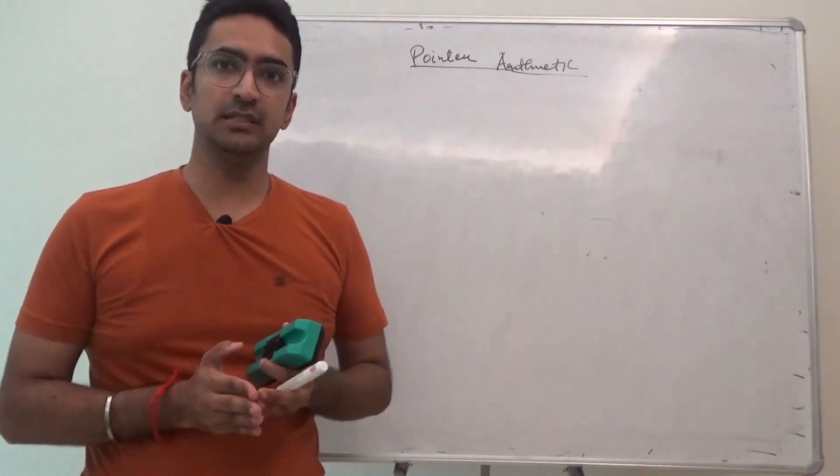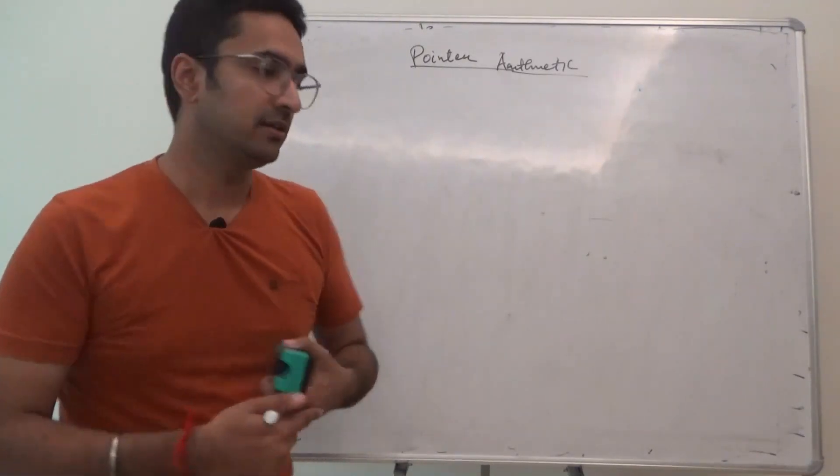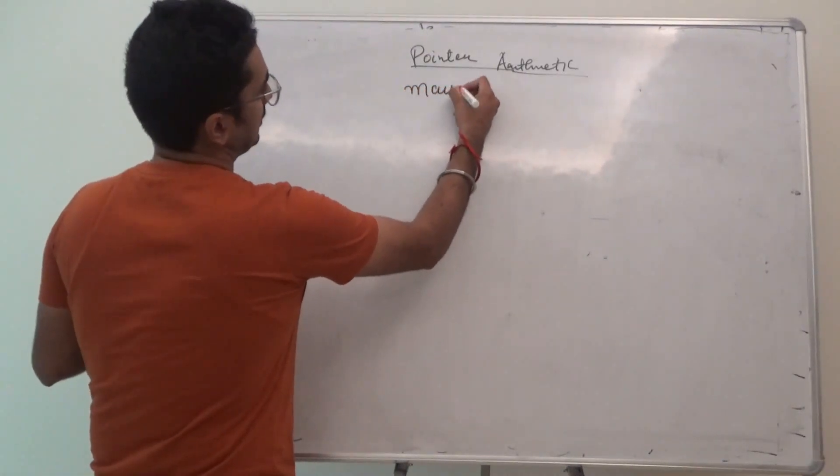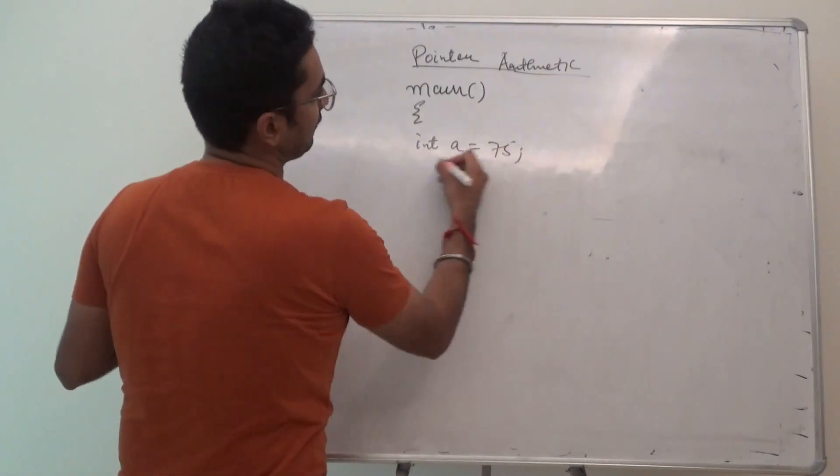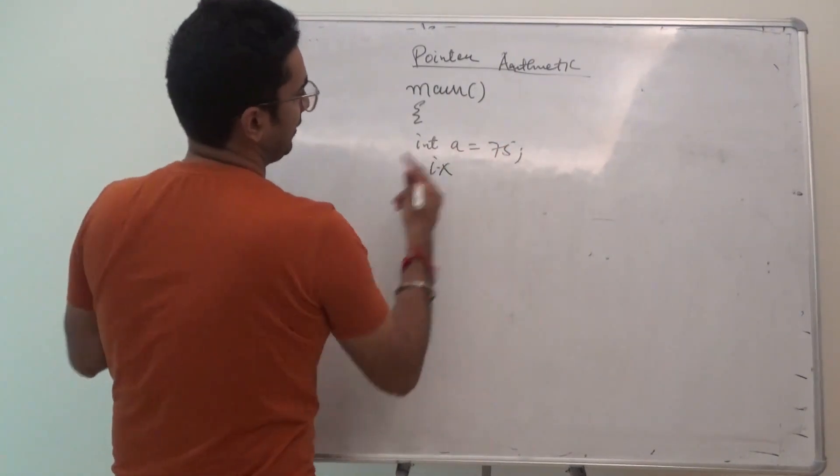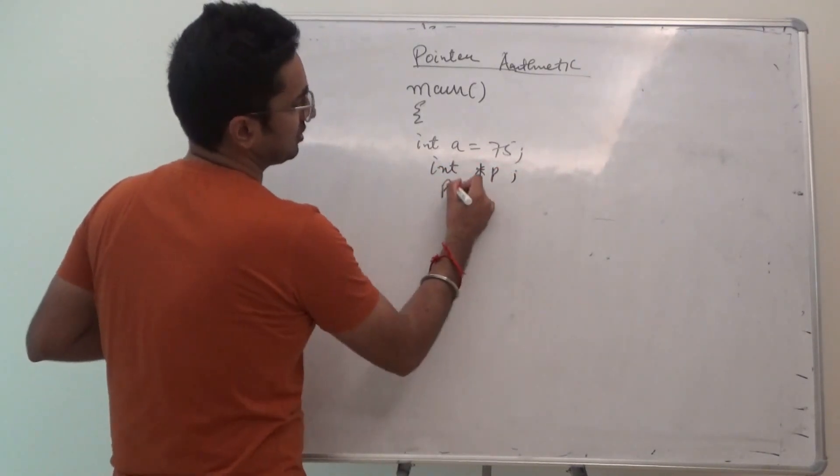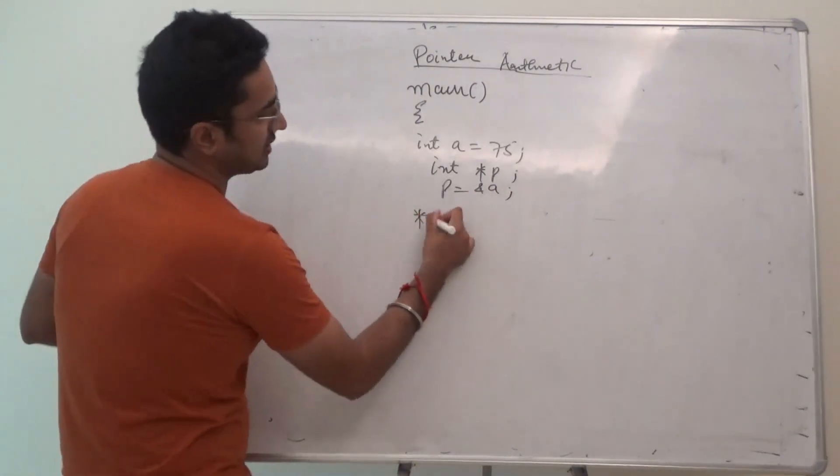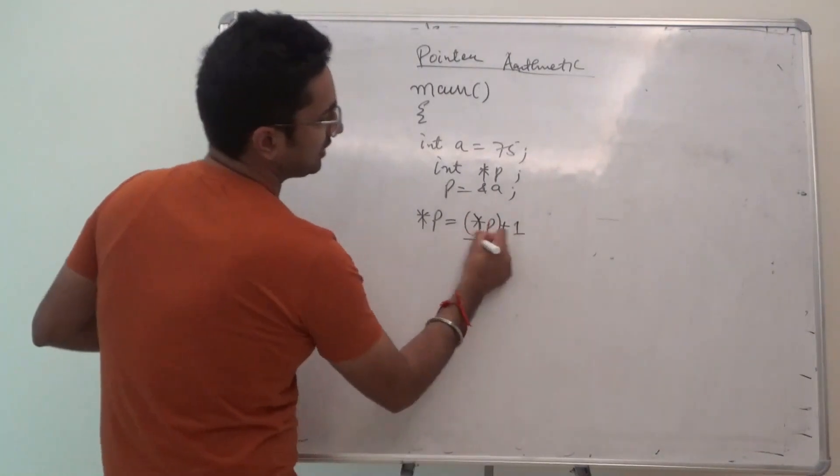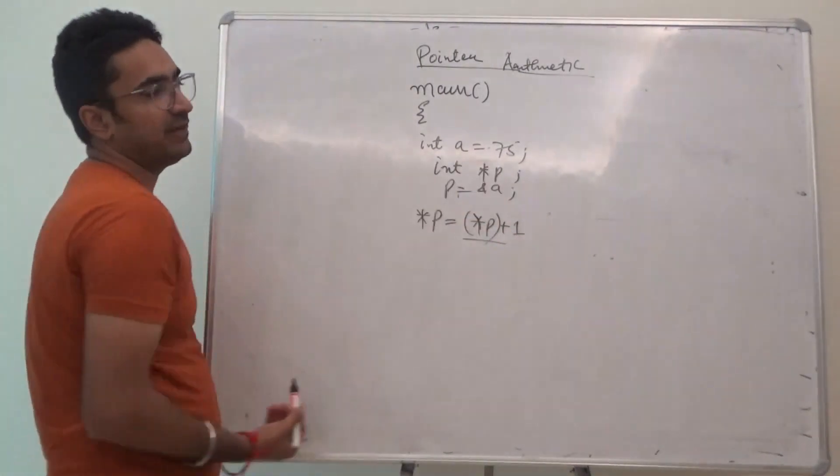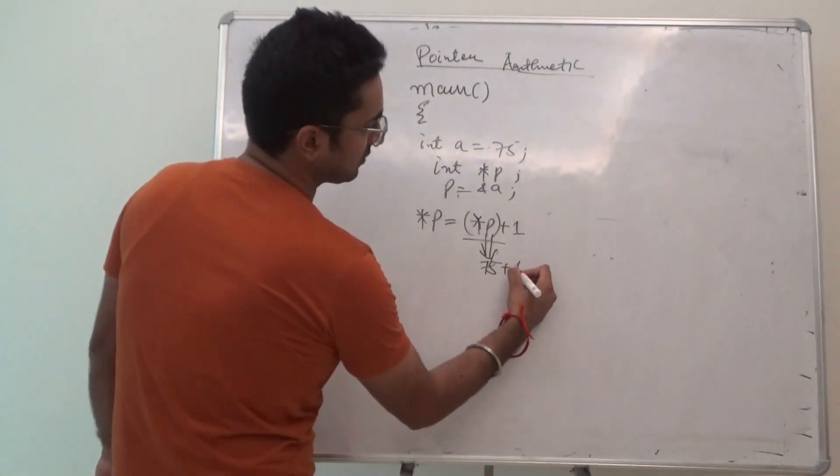Let me tell you, with pointers you cannot directly add integers to pointers. Like for example, we have main and we have int a, let's say 75, and we have a pointer int star p, p storing address of a. I can always write star p is equal to star p plus 1. So what is this star p? Star p is pointing to a, a value is 75. So star p value will also be 75 plus 1. That would be 76.